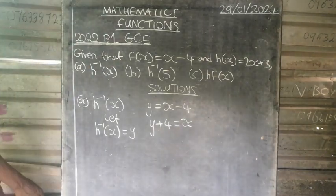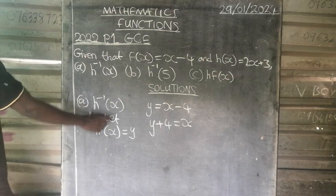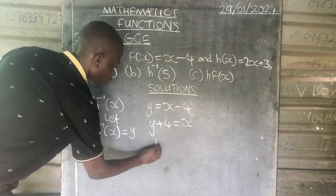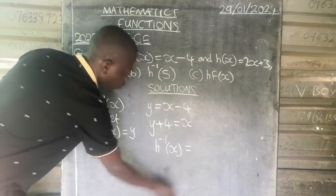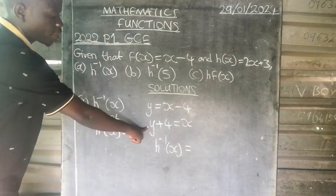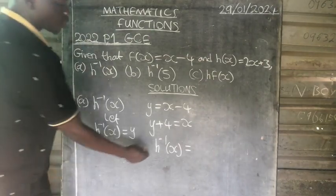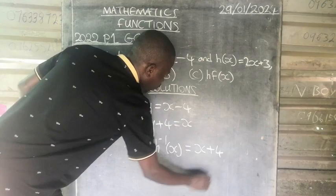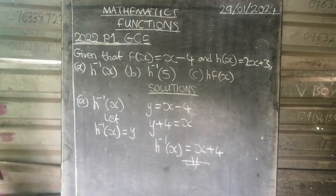So now upon making x subject of the formula, you have to bring back the actual equation, which is going to be h inverse of x equals—we replace where there is y with what is given inside the brackets, which is x. So it will be x minus 3 over 2.